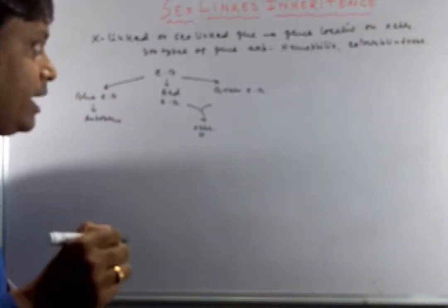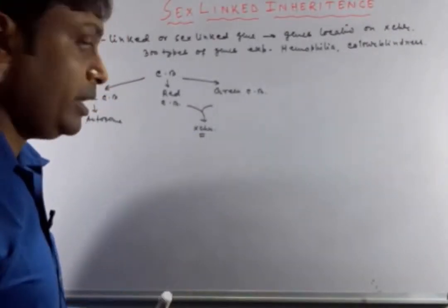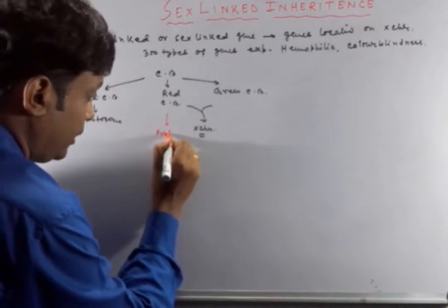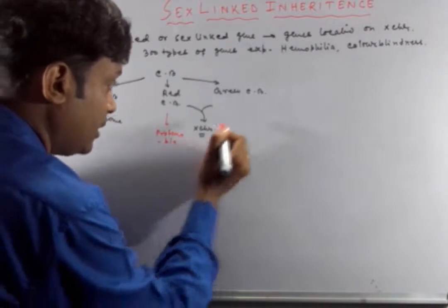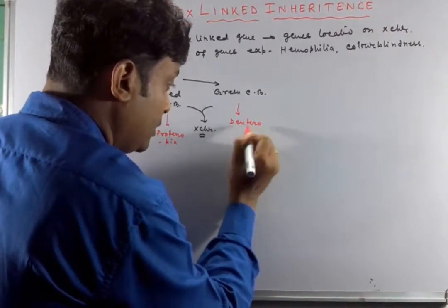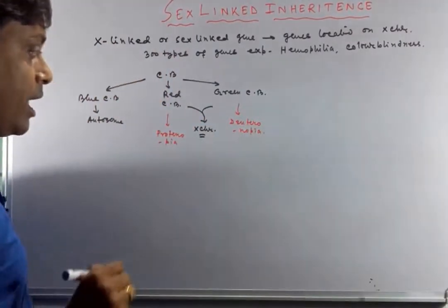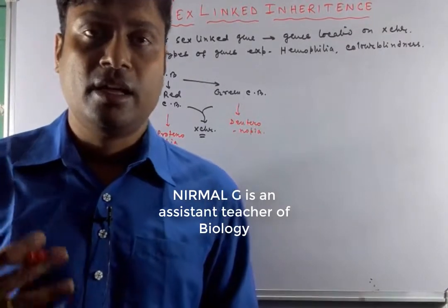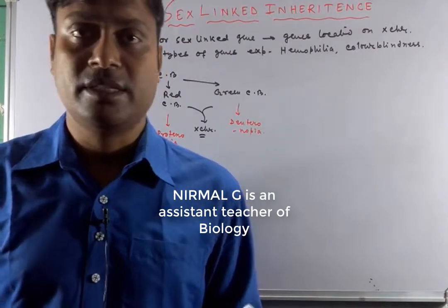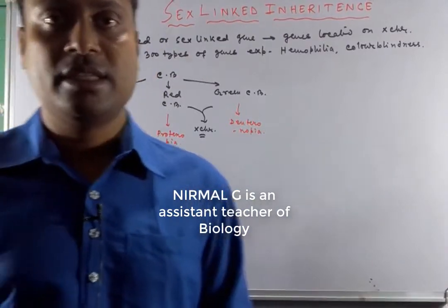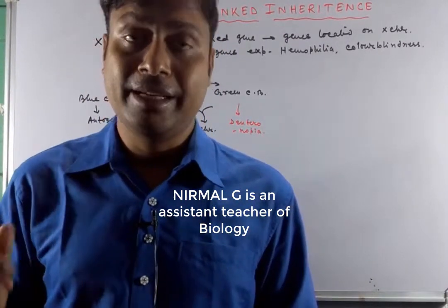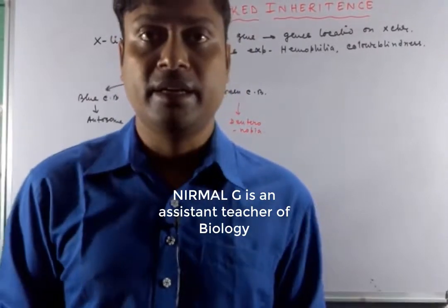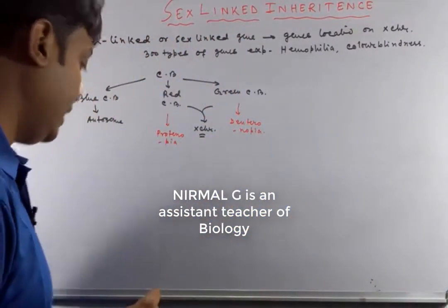We will study how these genes are actually inherited from generation to generation. Red color blind people are called protanopia, and green color blind people are called deuteranopia. Red and green color perception proteins are actually located in the cone cells, and these proteins are synthesized from particular genes. If any defect occurs in these genes — the red perception protein or green perception protein genes — the persons will suffer from red and green color blindness.